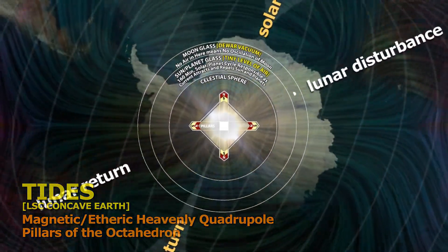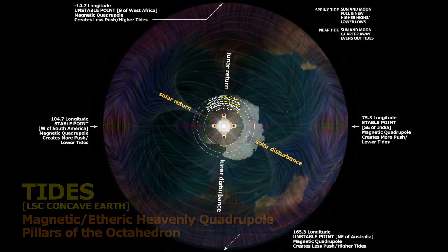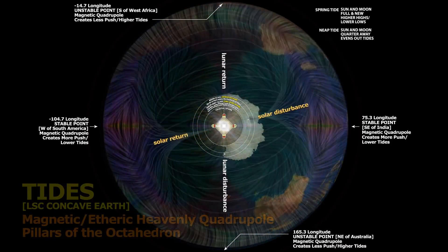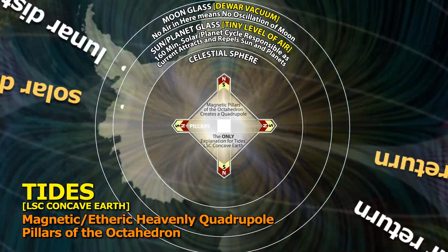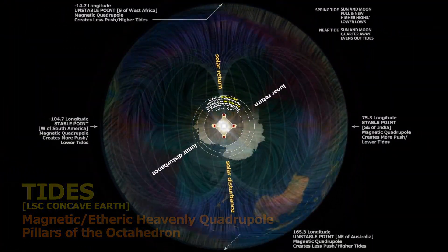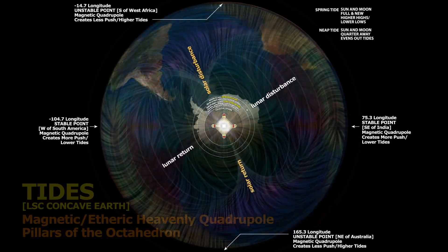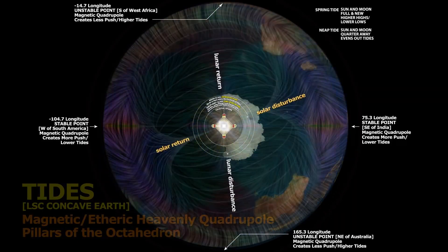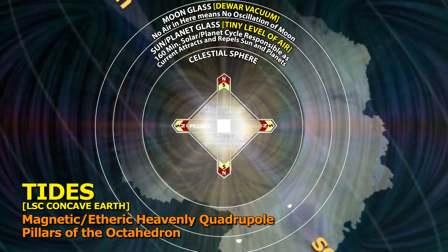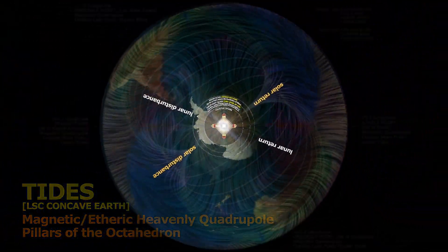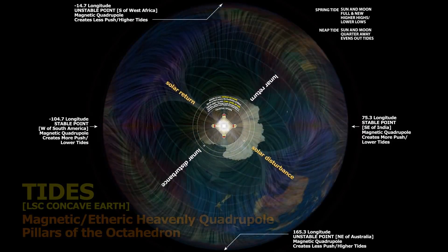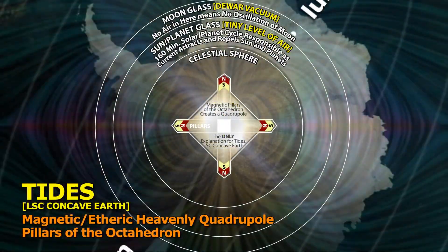Let's talk about the lunar disturbance and the lunar return — opposite the lunar disturbance — and you see a slight little variation in color. The area affected by the moon is going to be affecting the tides more than twice as much as the Sun. We see the Sun creating a solar return versus solar disturbance — the Sun also creates a disturbance but not as severe as the moon. This perfectly explains Maurice Allais's pendulum experiments.